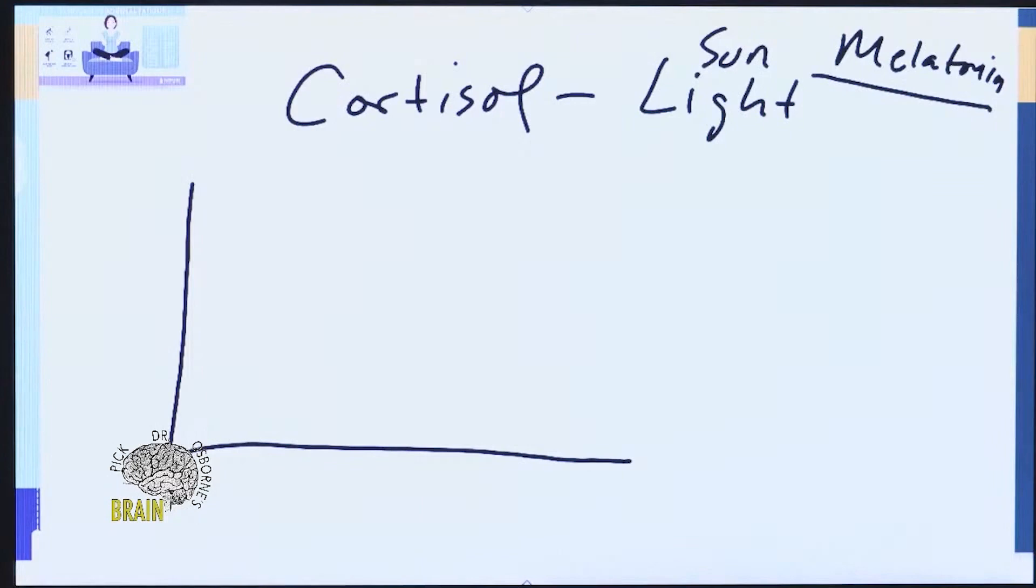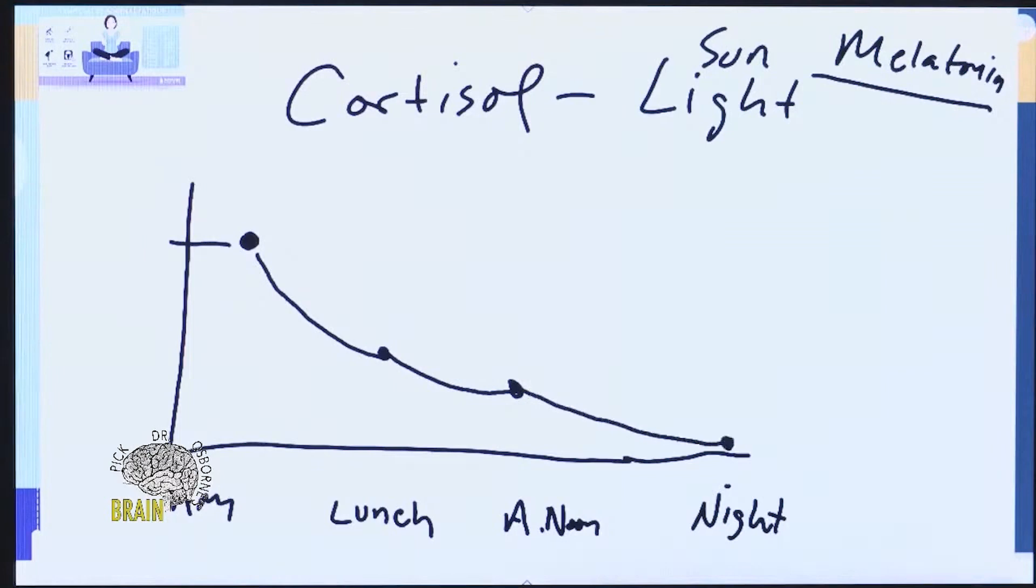Cortisol is supposed to be highest in the morning time. If this is a.m., and this is lunch, and this is afternoon, and this is night, we can look at how cortisol is produced. In the morning time cortisol is at its highest, and then as the day goes on cortisol drops a little bit, and then as we get into the afternoon hours cortisol drops a little bit more, and then as we get to night time cortisol drops to its lowest point. It almost follows like a lazy curve.